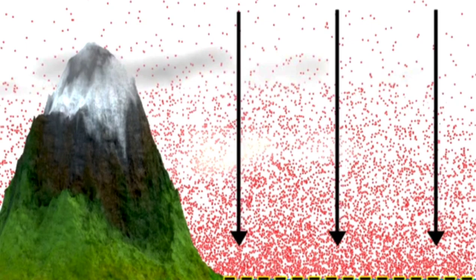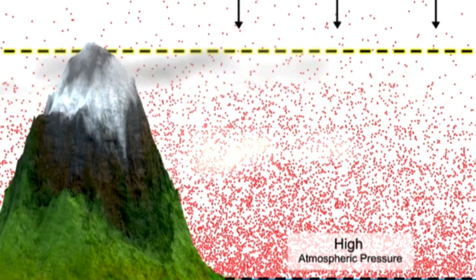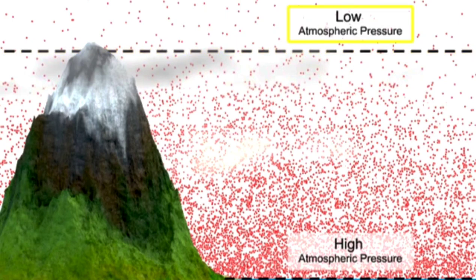At sea level, all the weight of the atmosphere above is pressing on the Earth, so atmospheric pressure is at its highest. As elevation increases, the total amount of atmosphere directly above the surface is much less than at sea level, therefore atmospheric pressure is much lower.